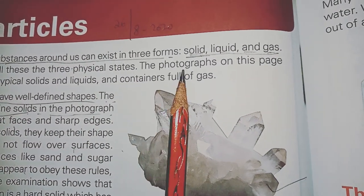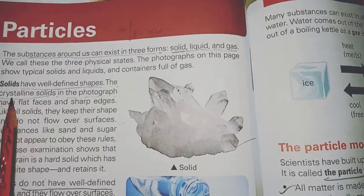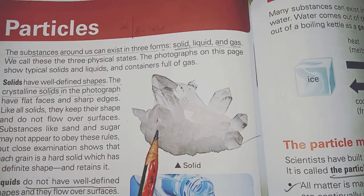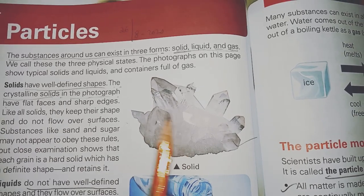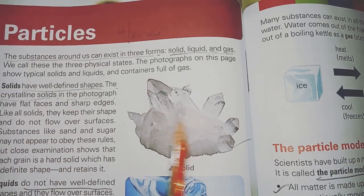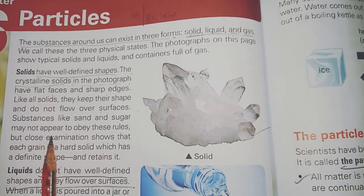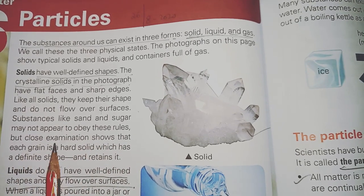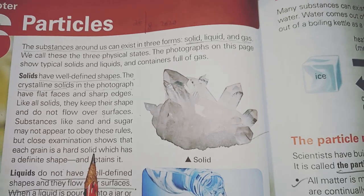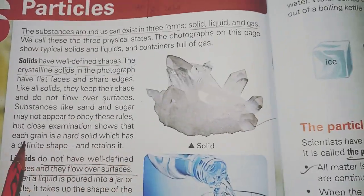We call these the three physical states. Here are photographs — one is for solid, one is for liquid, and the third is for gas. Solids have a well-defined shape. You can see any solid object has its shape. Here is the shape of a stone — it is a crystalline solid with flat surfaces and sharp edges. Substances like sand and sugar may not appear to obey these rules, but close examination shows that each grain is a hard solid which has a definite shape.